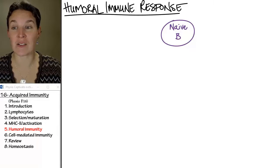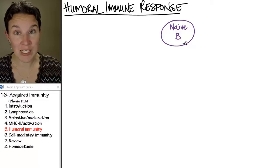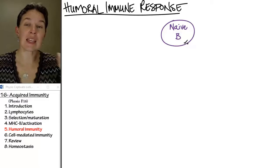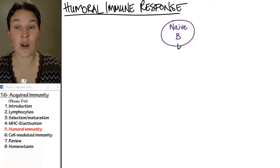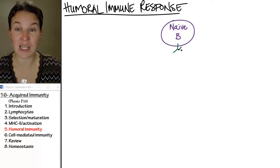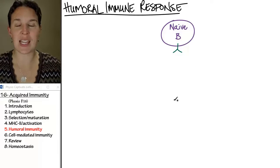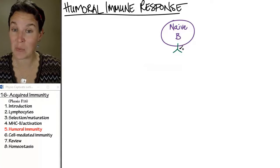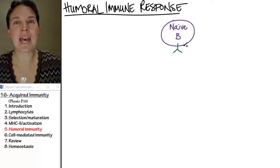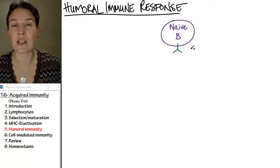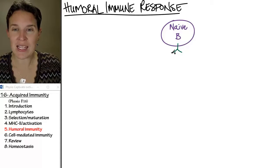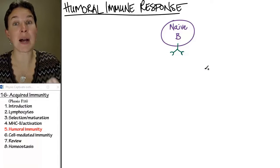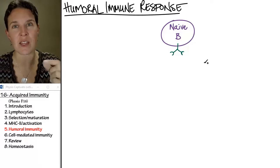We're going to start strong with a naive B cell. That naive B cell has to go to school, and before it can go to school it has to pick itself a specific antibody. It does a little gene shuffling, gets its specific antibody, and then embeds that antibody all over in its cell membrane. The antibody has those very specific receptors that allow it to bind to a very specific antigen.